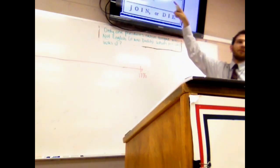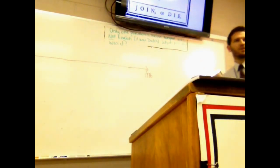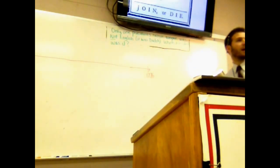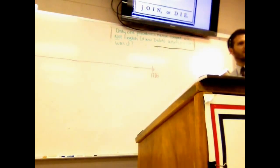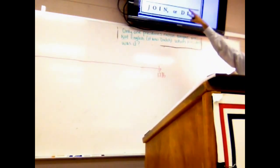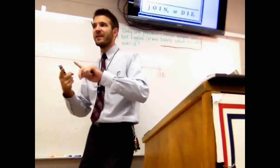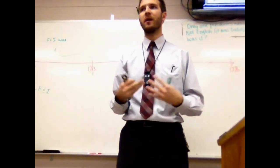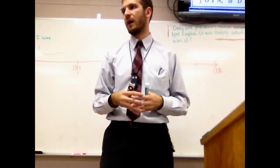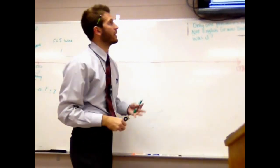The different colonies are represented by different segments of the snake. It goes: South Carolina, North Carolina, Virginia, Maryland, Pennsylvania, New Jersey, and New England. Importantly, it doesn't say Connecticut, Rhode Island, Massachusetts, New Hampshire — it calls them New England. There is a more developed identity in New England already in this time period. When we talk about Puritan New England, we're talking about more similar people with similar traits; it's already developing as a region.